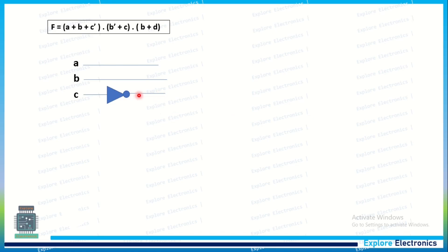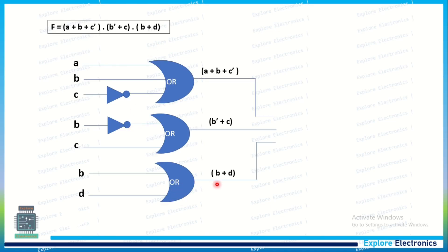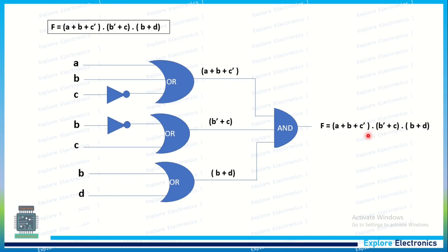Here is the implementation. First we have inputs A, B, C, D. A NOT gate on C generates C̄. A three-input OR gate takes A, B, and C̄, giving (A + B + C̄). A NOT gate on B generates B̄. A second OR gate takes B̄ and C, giving (B̄ + C). A third OR gate takes B and D, giving (B + D). Finally, an AND gate takes all three OR gate outputs, producing the final output F = (A + B + C̄)(B̄ + C)(B + D).